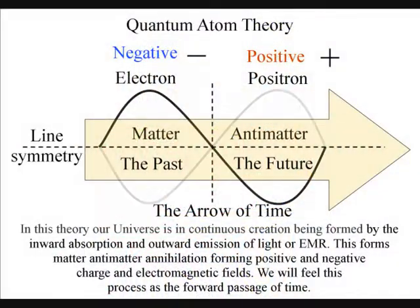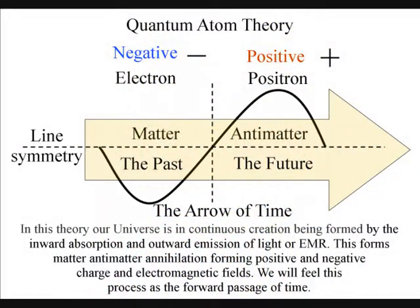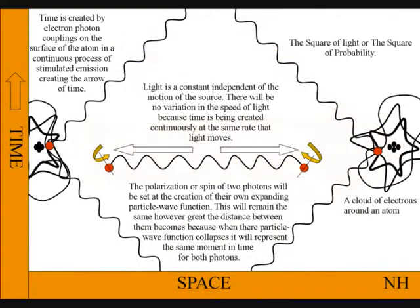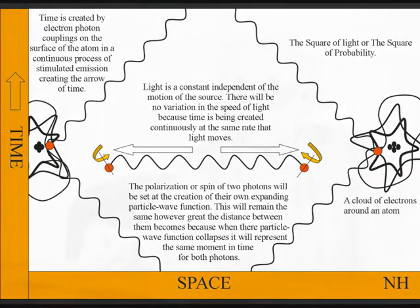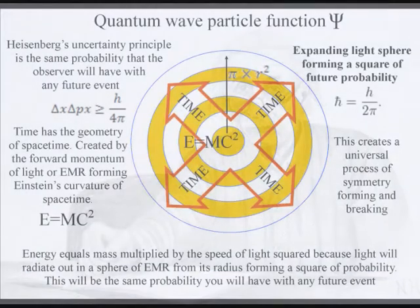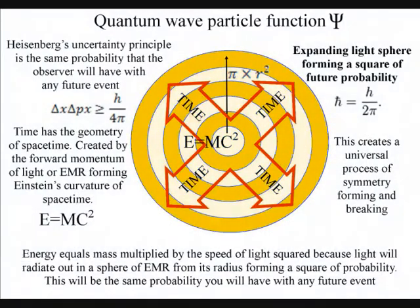The deep fundamental difference between quantum and classical mechanics is that quantum mechanics represents the forward passage of time itself. Objects form their own space-time geometry, forming a square of probability. Therefore we have Einstein's famous equation, energy equals mass times the speed of light squared.